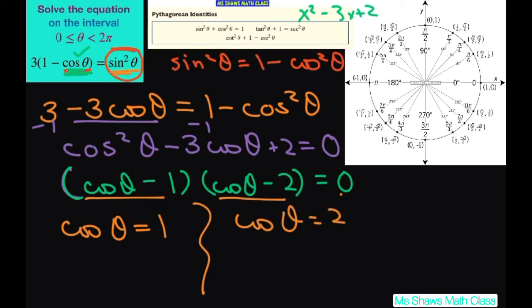Now we find where cosine of theta is 1. Cosine is 1 right here. So that means our angle is 0. We are not going to say 2 pi because it can't equal 2 pi.